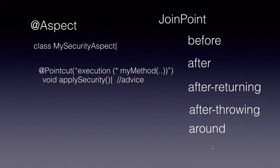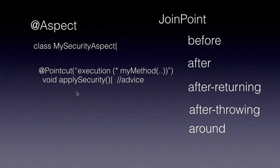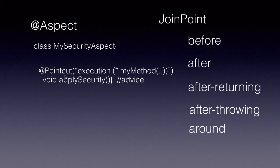Spring supports method level join points. There are no field or constructor level join points in Spring. To summarize: an aspect is a class that has a number of advices, and each aspect addresses a particular concern like security or transaction management. A join point is where a particular advice should be applied to the other classes and methods in our application. A point cut provides an expression language to express the join points.